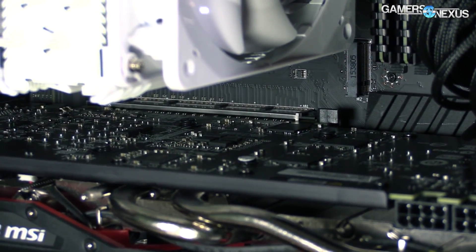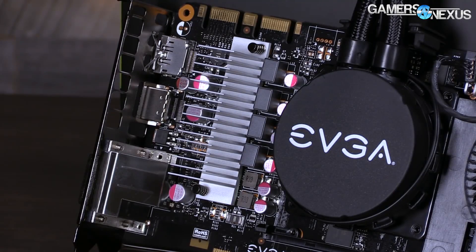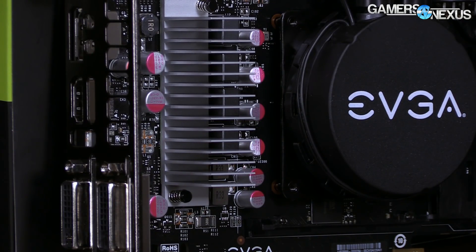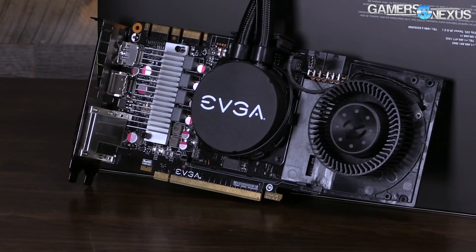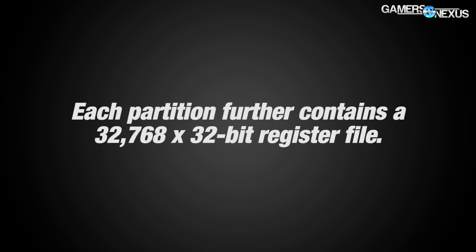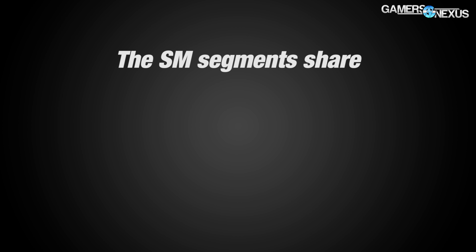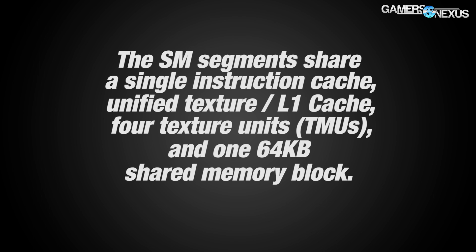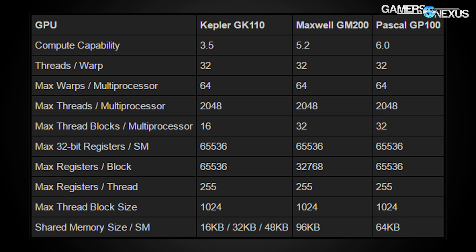The reduced CUDA core count per SM is because GP100 has been partitioned into two sets of 32-core processing blocks, each containing independent instruction buffers, warp schedulers, and dispatch units. There is one warp scheduler and one instruction buffer per 32-core partition, and two independent dispatch units per partition — four total per SM. Each partition contains 32,768 32-bit register files. The SM segments share a single instruction cache, unified texture and L1 cache, four texture units (TMUs), and one 64-kilobyte shared memory block. Pascal has half the cores per SM as Maxwell but the same register file size and comparable warp and thread counts, and can sustain more in-flight threads, warps, and blocks due to increased register access.